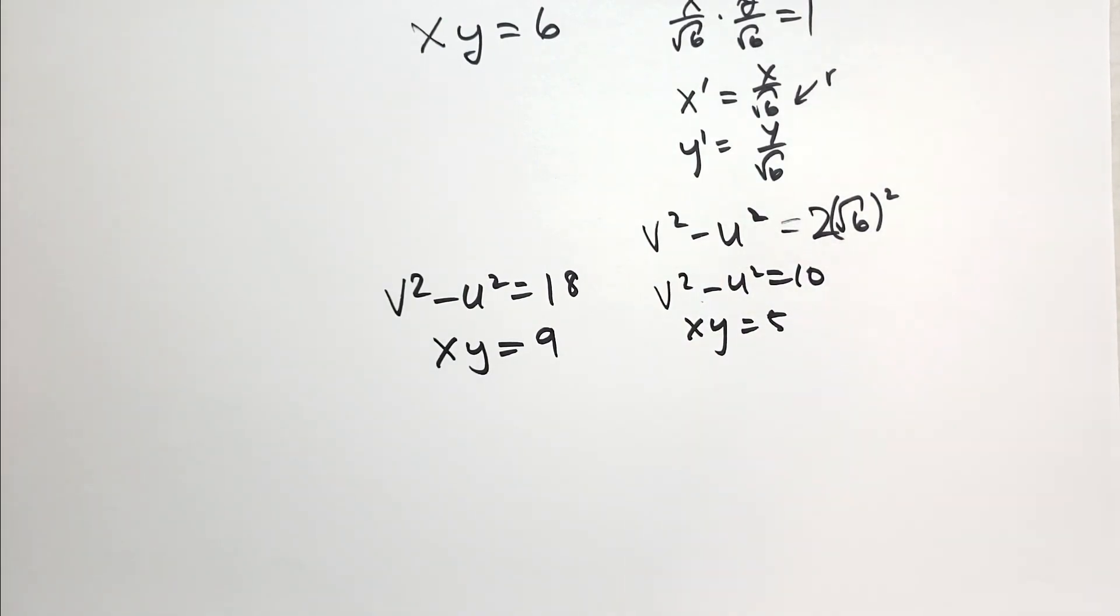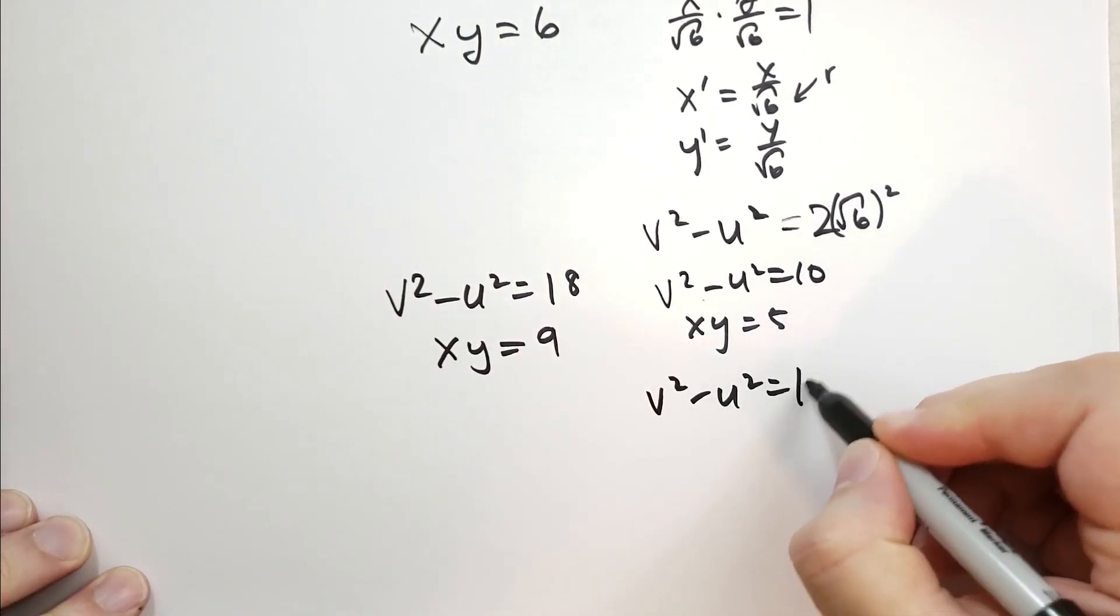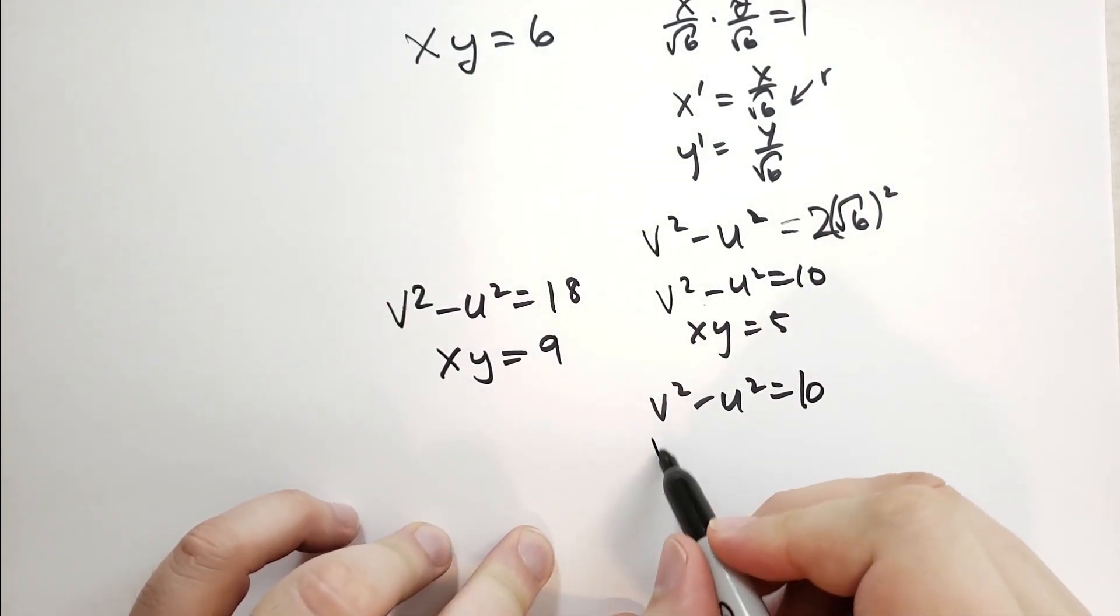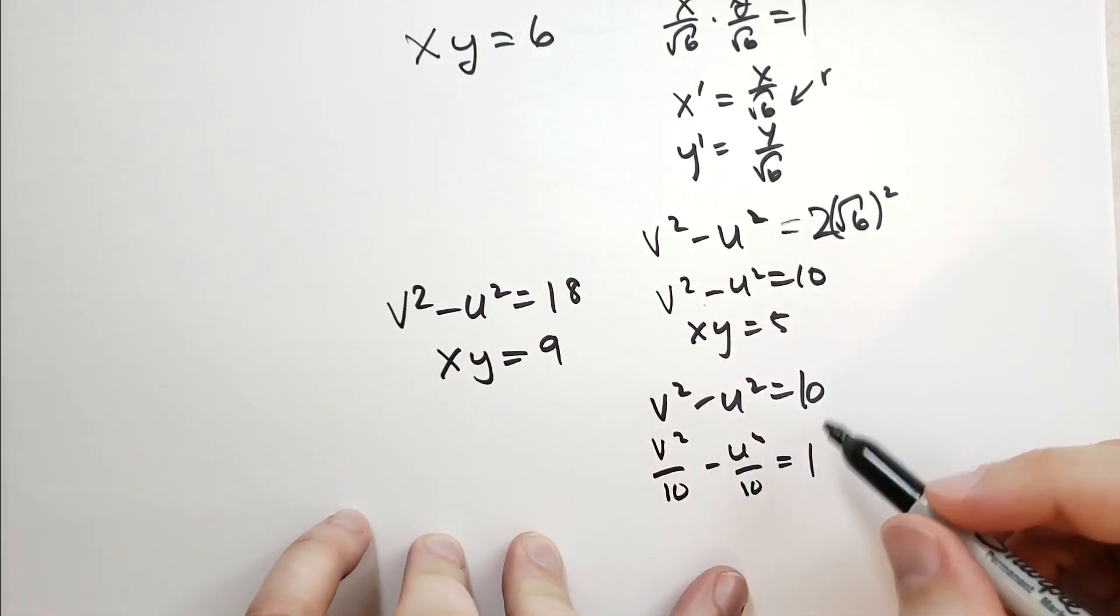What are we doing when we have v squared minus u squared equals 10? Well, if we were to divide both sides, everything by 10, we get v squared over 10 minus u squared over 10 equals 1.